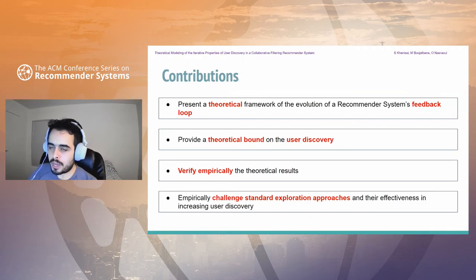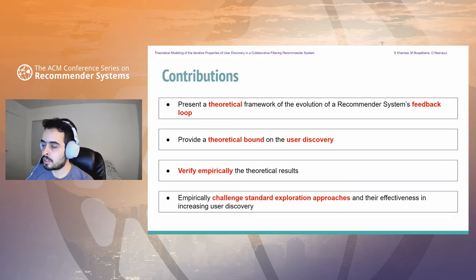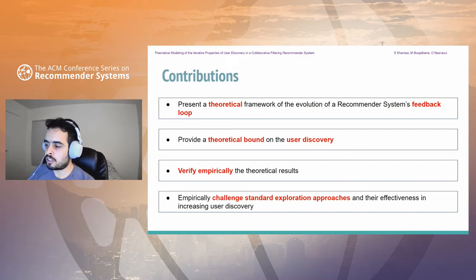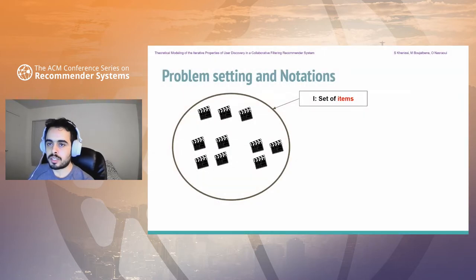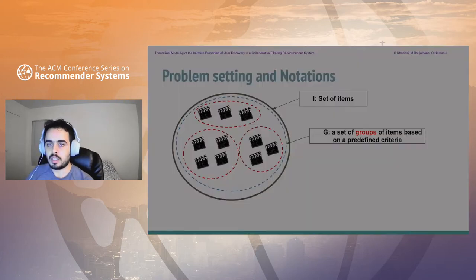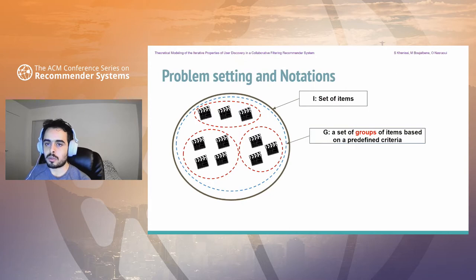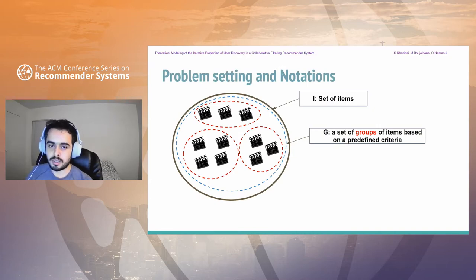Our main contributions are: we present a theoretical framework of the evolution of a recommender system's feedback loop; we provide a theoretical bound on the user discovery; we verify empirically the theoretical results; and we challenge standard exploration approaches and their effectiveness in increasing user discovery. We start by defining the problem and notations. We define I as the set of all available items, and G as the set of groups of items based on some criteria like genre or predefined similarity metric. In this work, we work with groups of similar items rather than individual items.